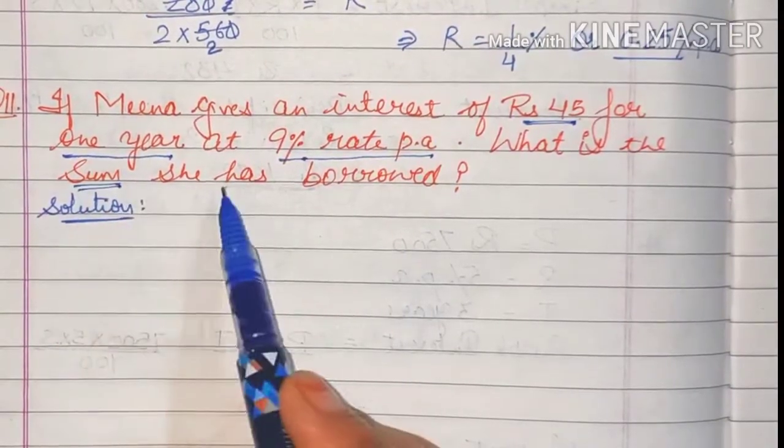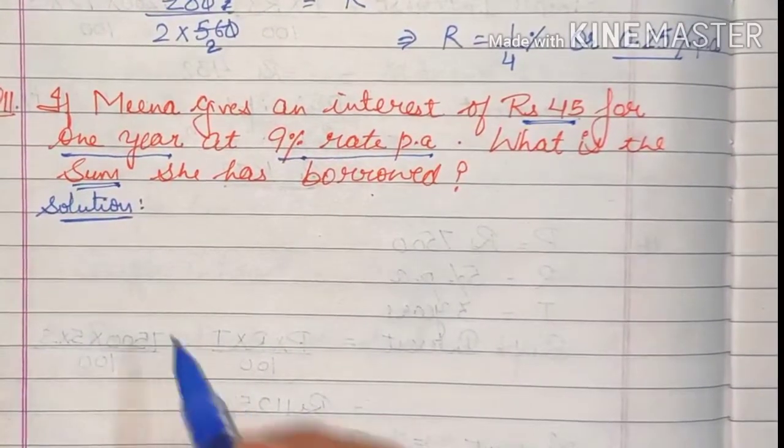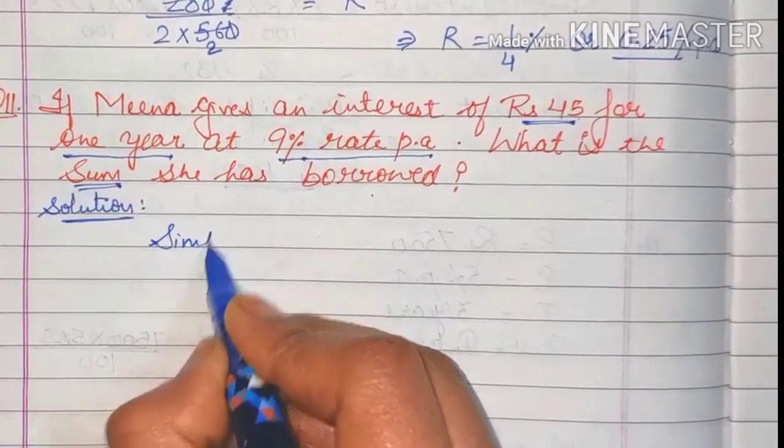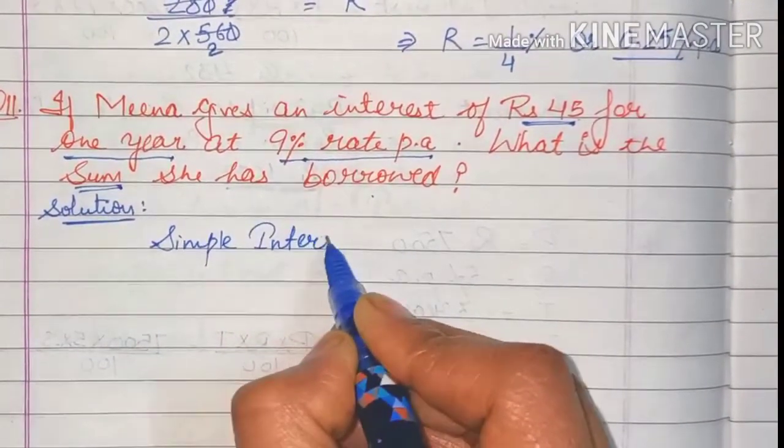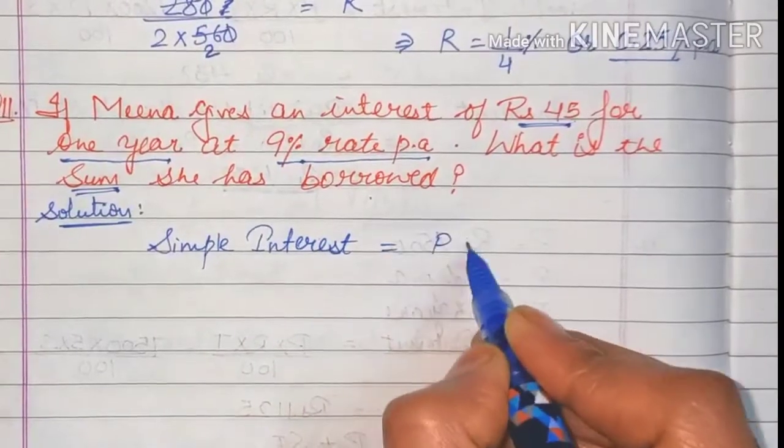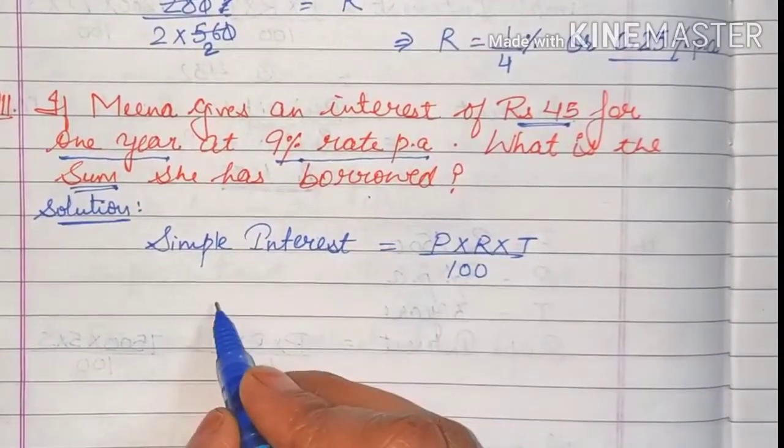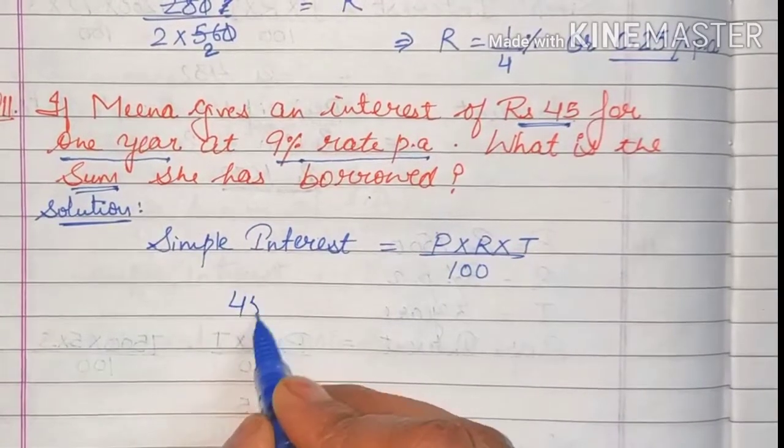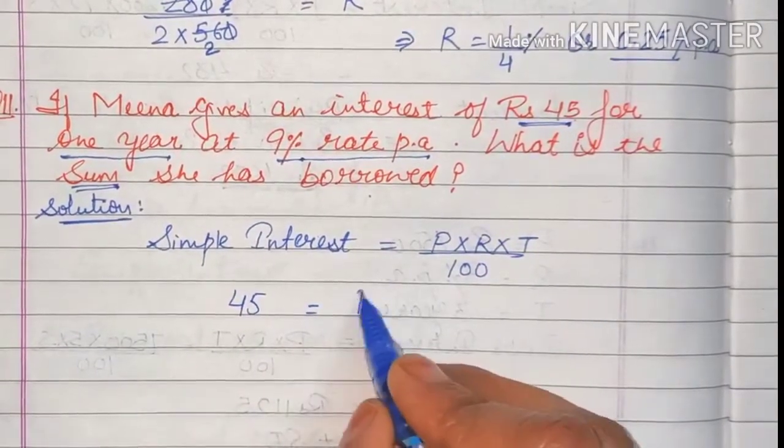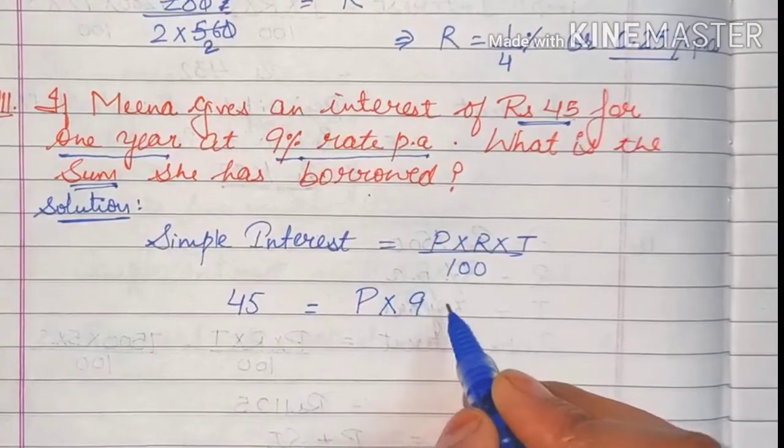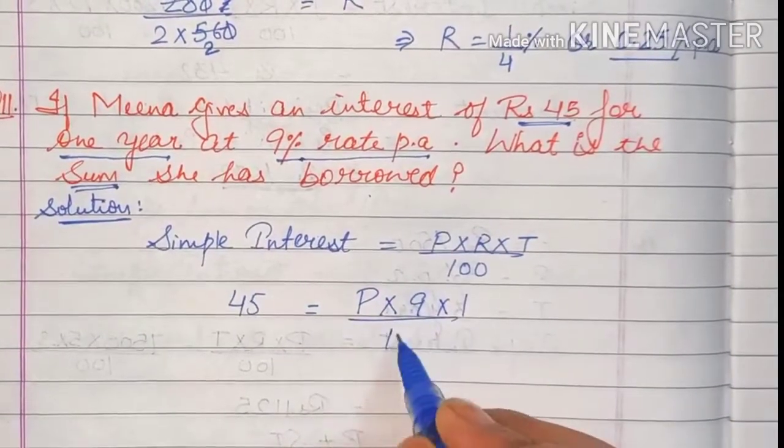So again we will use the formula: simple interest is equal to P into R into T upon 100. Simple interest is given 45, principal is not given so we will write it as P, rate is given 9, time period is 1 upon 100.